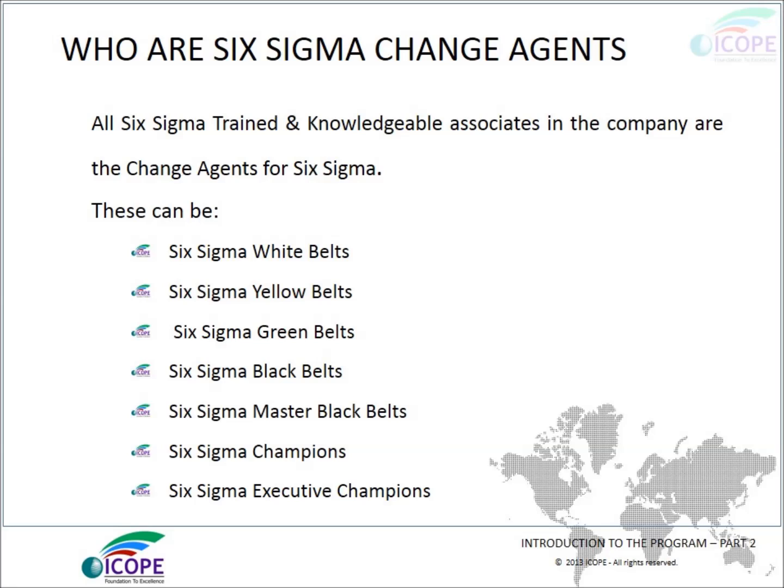Who are Six Sigma change agents? All Six Sigma trained and knowledgeable associates in any company are the Six Sigma change agents. These can be Six Sigma White Belts, Yellow Belts, Green Belts, Black Belts, Master Black Belts, Champions, and Executive Champions.